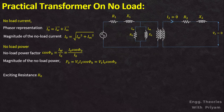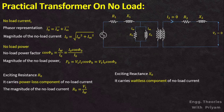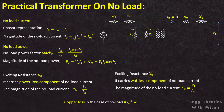The exciting resistance R₀ carries the power loss component of the no-load current, and its magnitude is equal to V1 / Iw. The exciting reactance X₀ carries the wattless component of the no-load current, and its magnitude is V1 / Im. The copper loss in no-load condition is I₀²·R, which is very small and can be neglected.